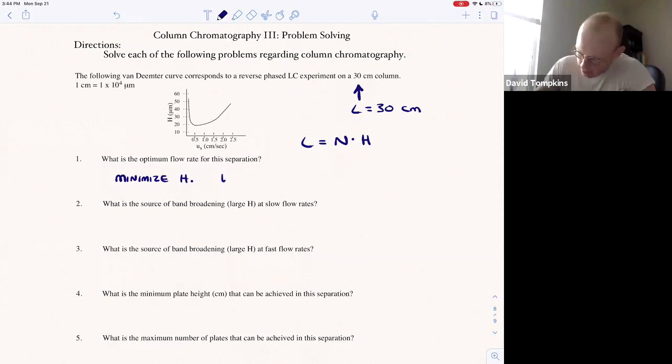So we have the minimum plate height when the flow rate is approximately right here, or 0.5 centimeters per second.